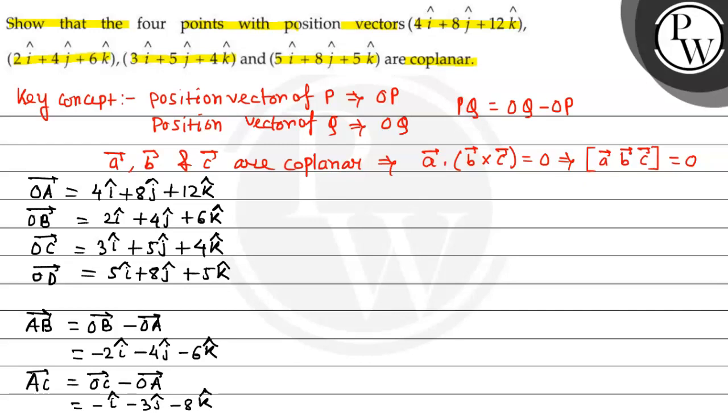Now we find out AD vector. AD is equal to OD minus OA vector. So, i cap and 0 j cap, and -7k cap.